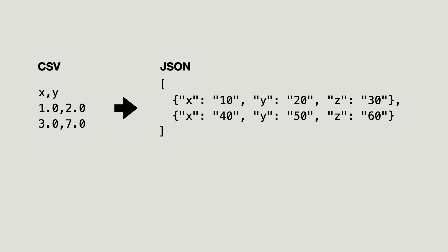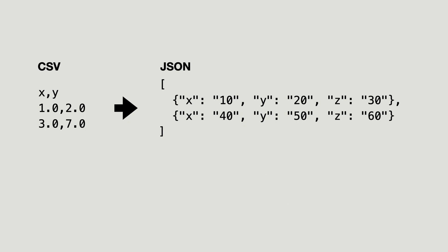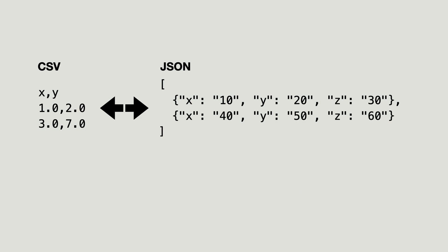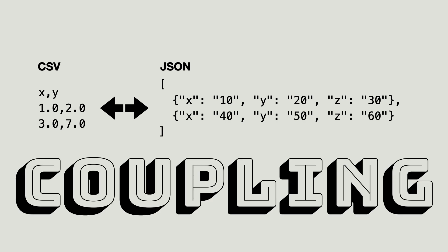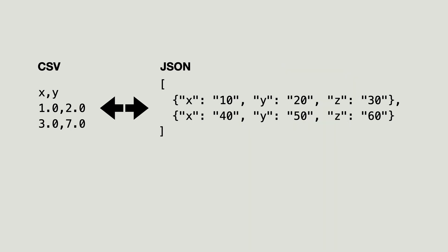In this video I'm going to make a program that can convert CSV files to JSON files, but then the program will grow. The program also needs to convert JSON to CSV. With every change I make the program grows and a well-known problem becomes visible: coupling. The program becomes harder to maintain and I will use inversion of control to decouple the code.